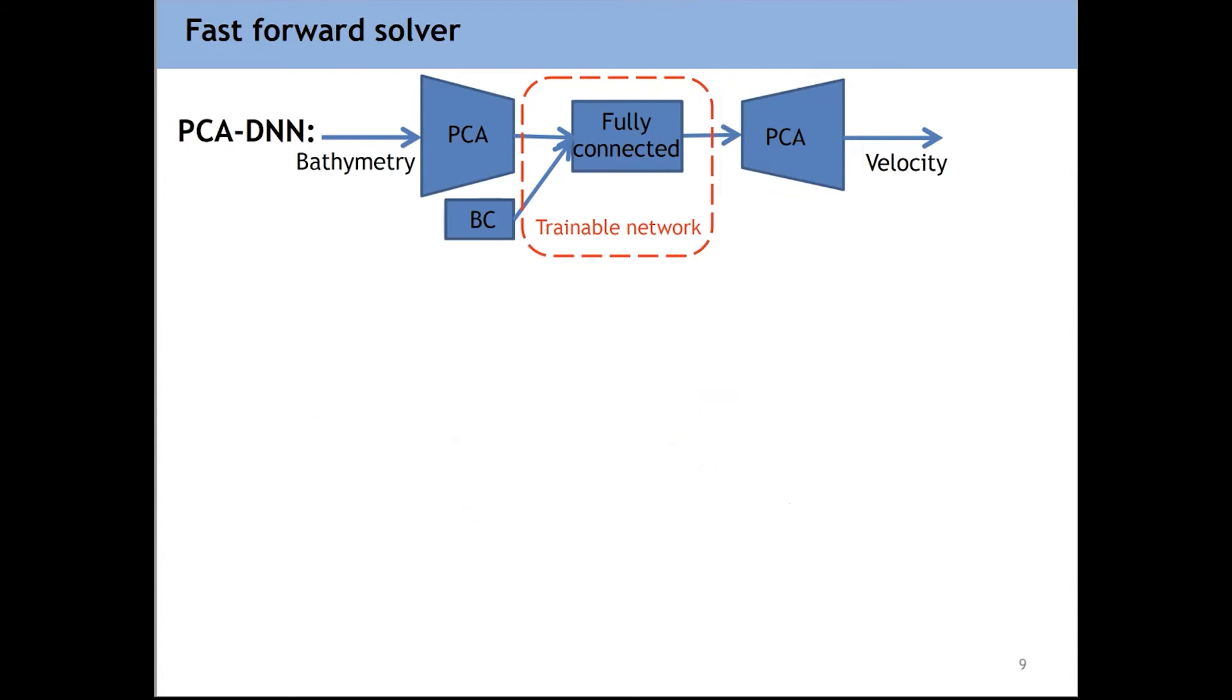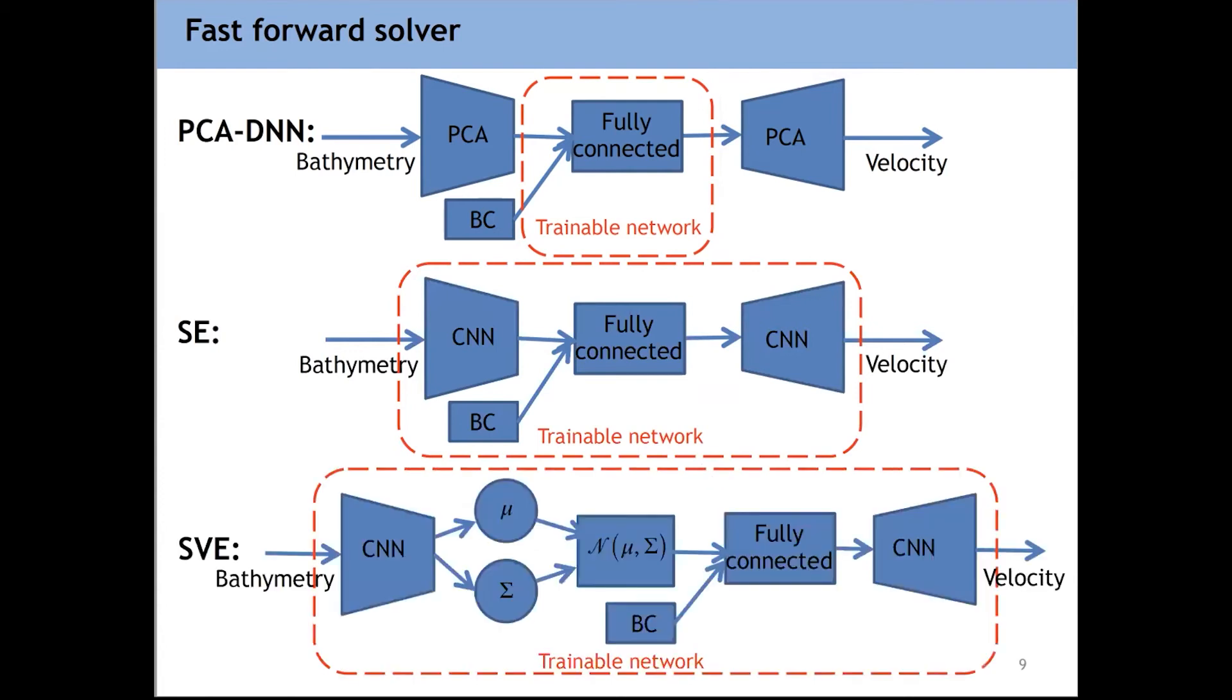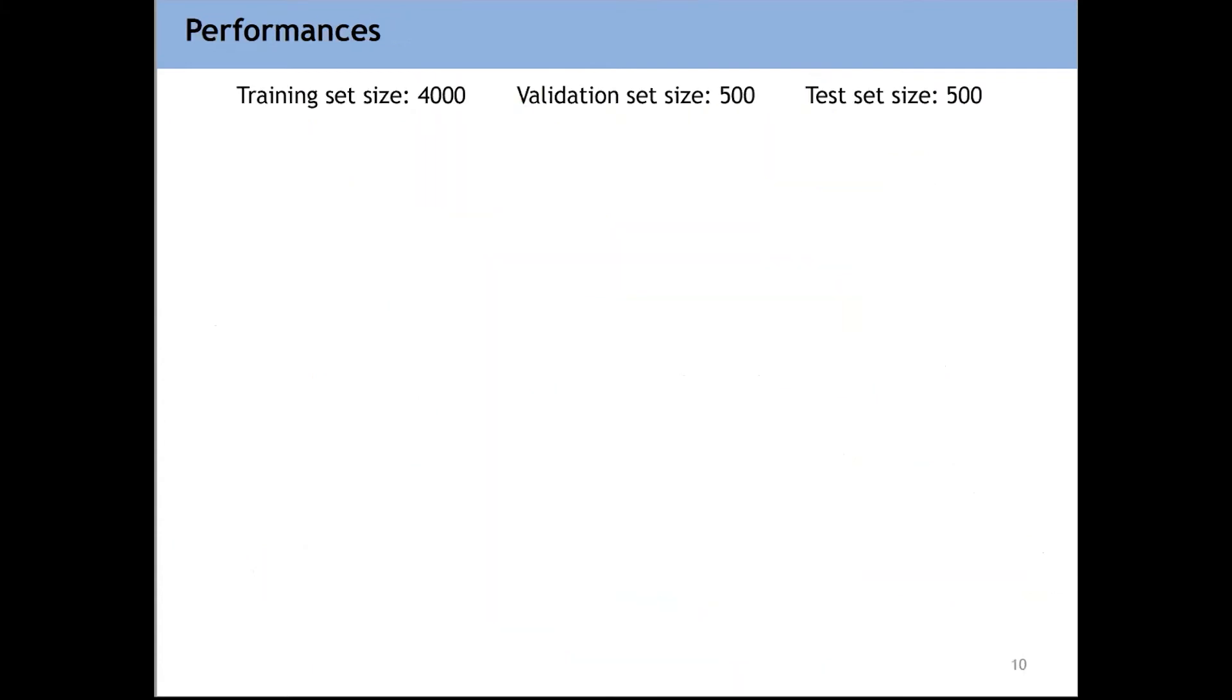And we use two other DNN-based solvers as well. SE stands for supervised encoder. It has an autoencoder-like structure, but instead it's being used for supervised learning because here the input and output are different. And another algorithm we also tried here, SVE, which stands for supervised variational encoder. And similar to SE, this is a sort of supervised version of a variational autoencoder. And it goes from bathymetry to velocity, similar to the other two. Anyway, we validate sort of our fast forward solver. We use these three solvers and we try to compare their performance with each other.